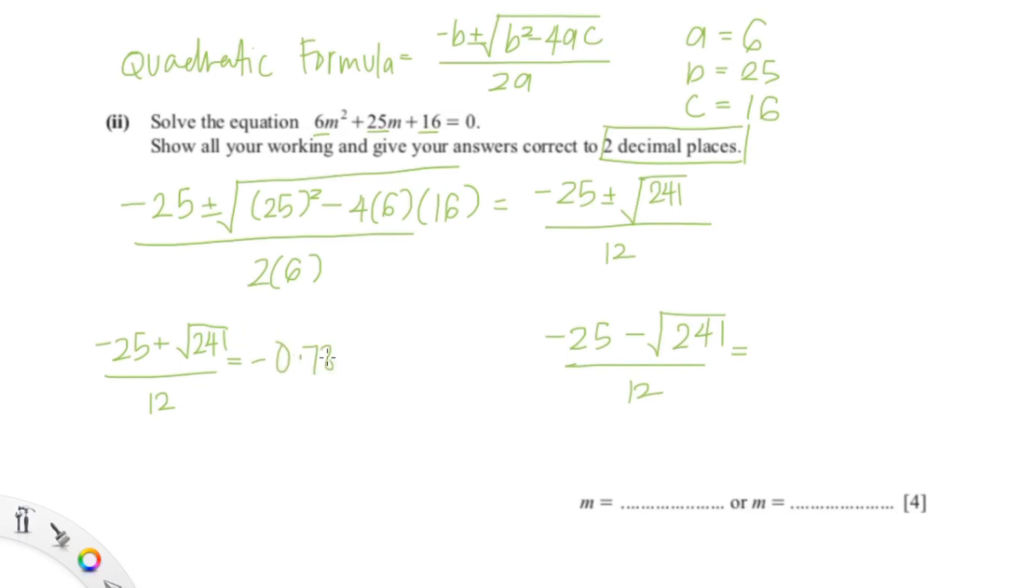So I got -0.789, and because it's two decimal places, I'm going to round it off, which would give me -0.79. The same for the other one, which is -3.377, which would give me -3.38. So our m is -0.79 and -3.38.